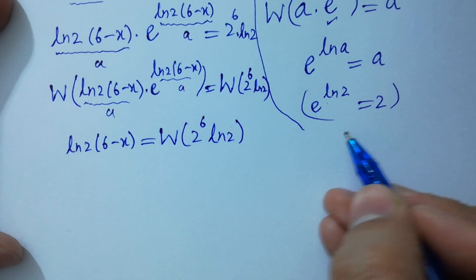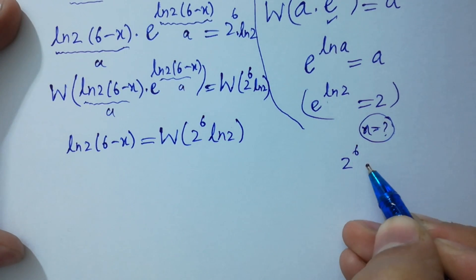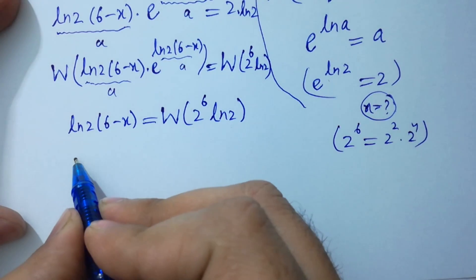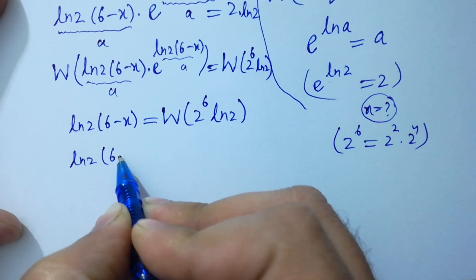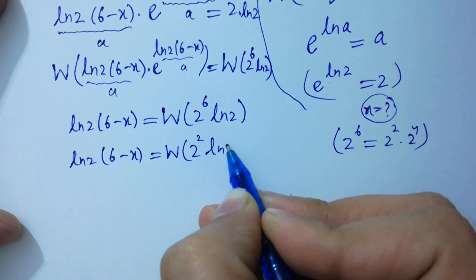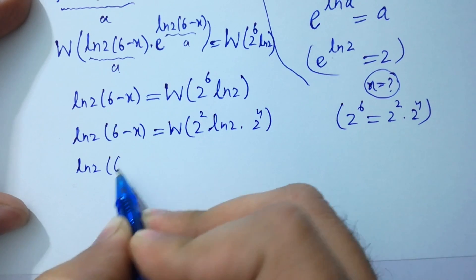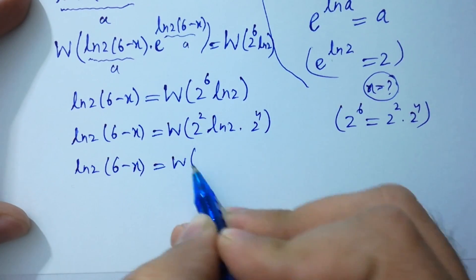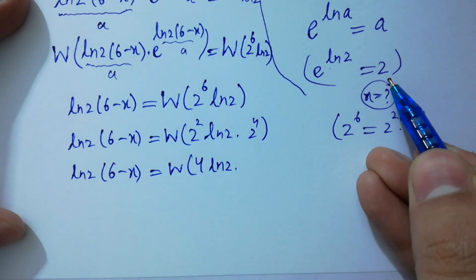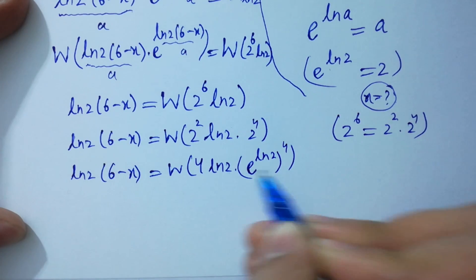To find x, simplify further. Since 2 to the power 6 equals 2 to the power 2 times 2 to the power 4, natural log 2 times 6 minus x equals W of 2 to the power 2 times 2 to the power 4 times natural log 2. Since e to the power natural log 2 equals 2, we write 2 as e to the power natural log 2, raised to the power 4, giving W of 4 natural log 2 times e to the power 4 natural log 2.